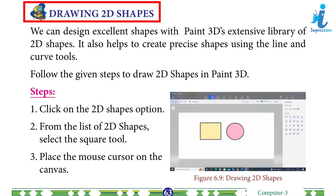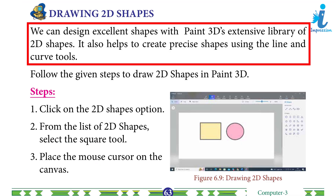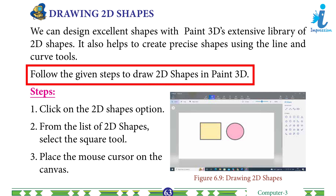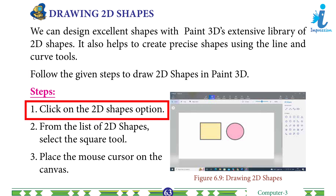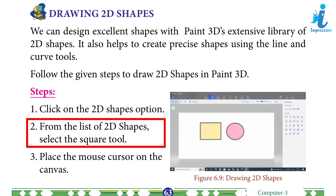Drawing 2D shapes: we can design excellent shapes with Paint 3D's extensive library of 2D shapes. It also helps to create precise shapes using the line and curve tools. Follow the given steps to draw 2D shapes in Paint 3D. Step 1: Click on the 2D Shapes option. Step 2: From the list of 2D shapes, select the Square tool.